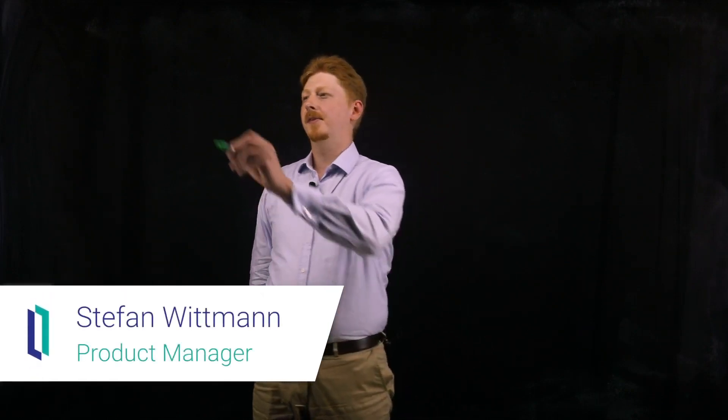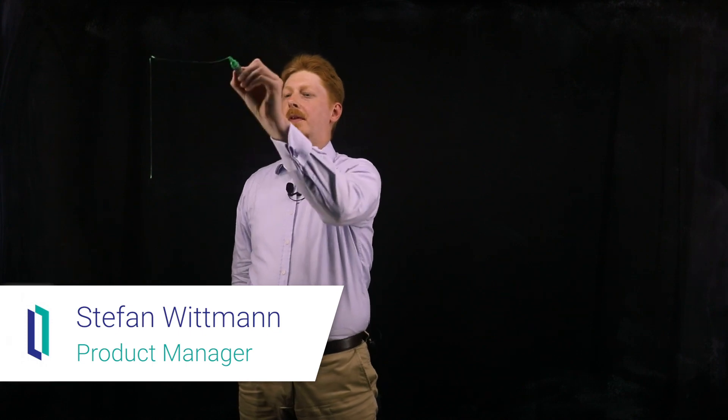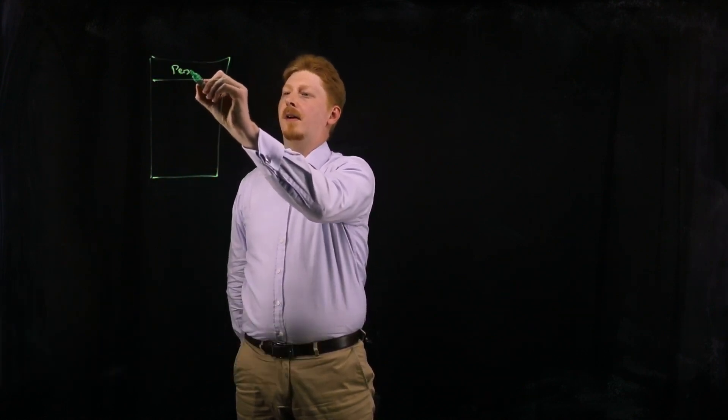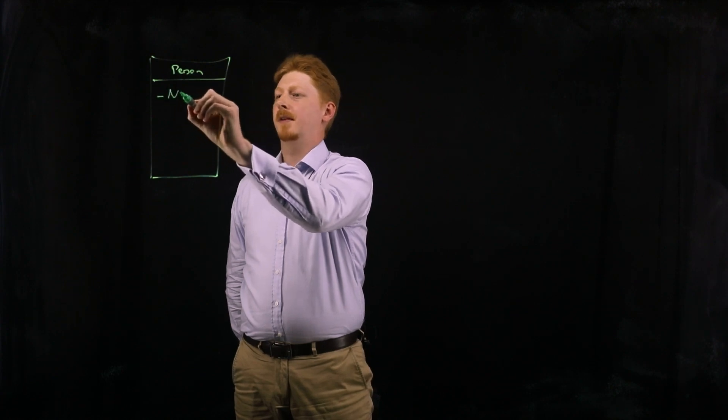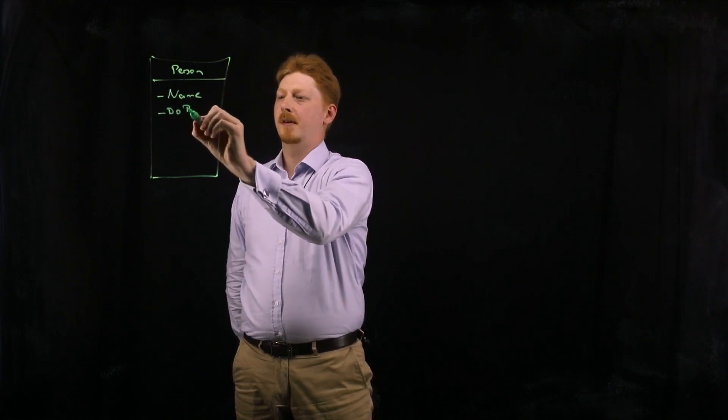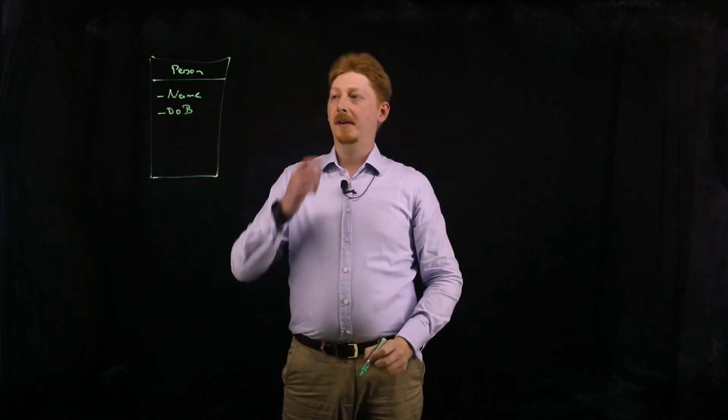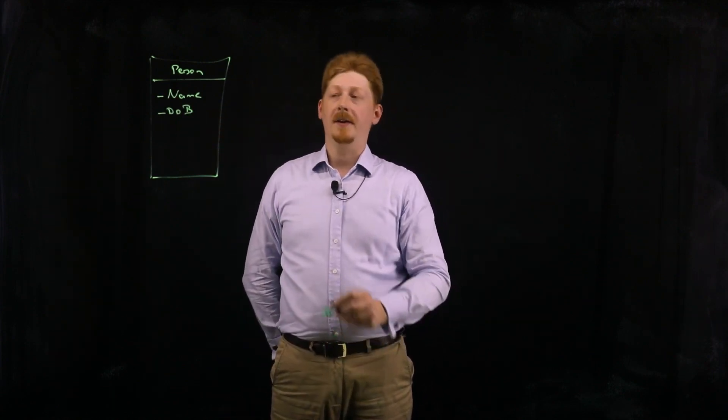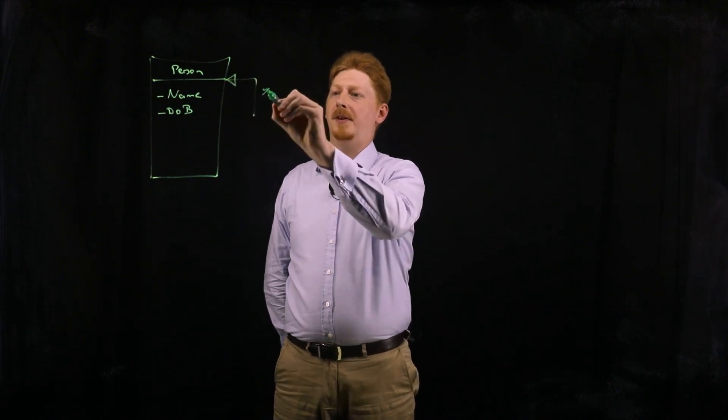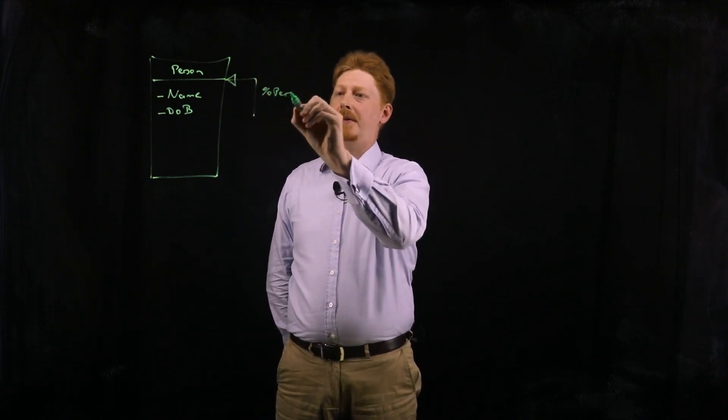Let's take a look at why multi-inheritance is such a powerful feature. Assume I have a class Person with a couple of properties, let's say just two: the name and the date of birth. If this is a persistent class, then by default it inherits from one system class which is %persistent.